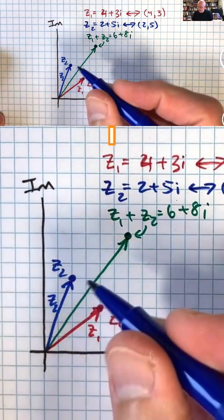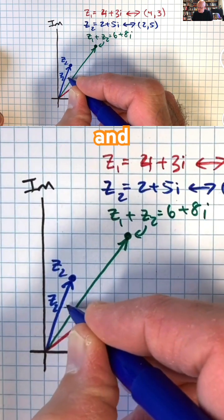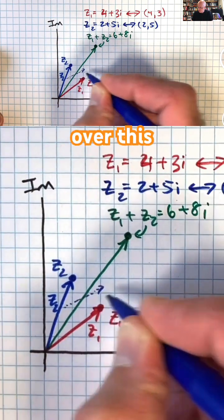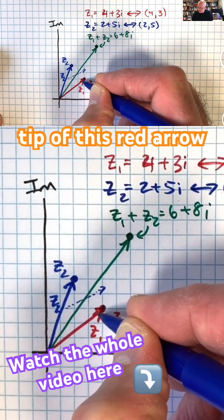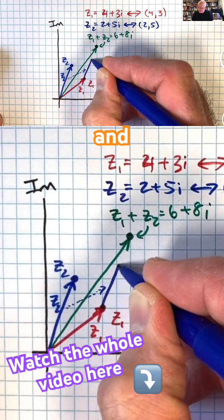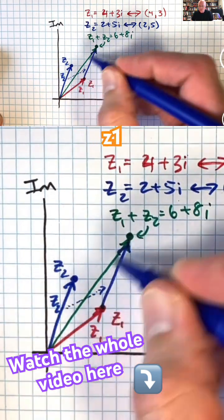Are you back now? I hope you saw that you could take this arrow, this vector for Z2, and translate it over this way and draw it starting at the head of Z1 here, this tip of this red arrow, and the ending point would be at the ending point for Z1 plus Z2.